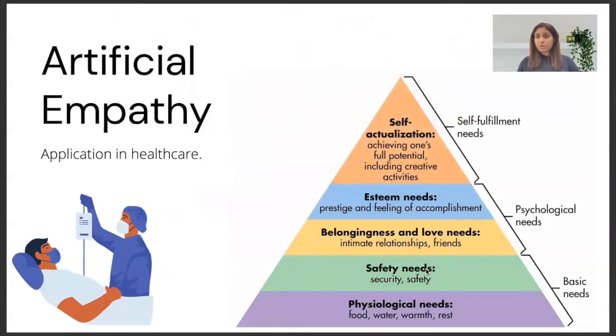Artificial empathy or computational empathy is the development of AI systems which can detect and respond to human emotions in a more empathetic way. Empathy is the ability to understand and feel what the other person is experiencing by putting oneself in other's position and can be of different types.